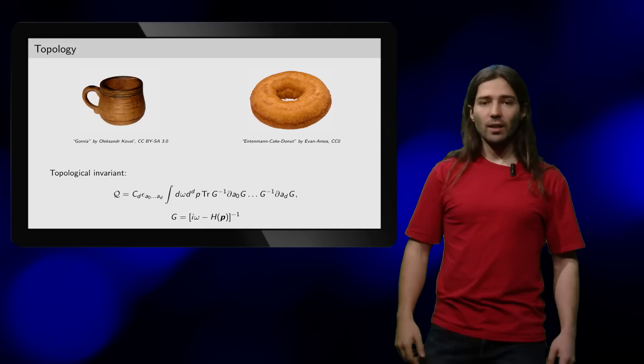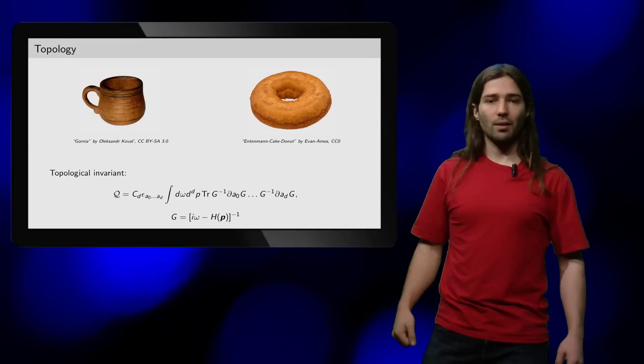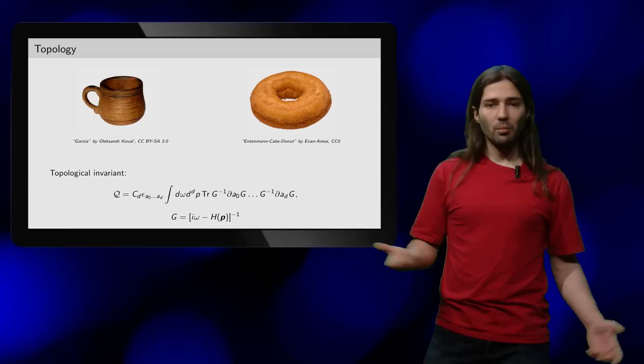In condensed matter systems, expressions like this are the quantities that cannot be smoothly changed. While such topological invariants cannot be visualized, all the robustness of topological protection derives from their existence.